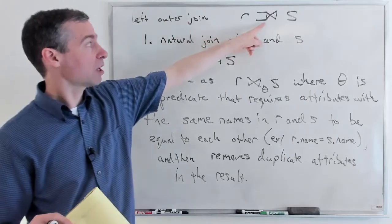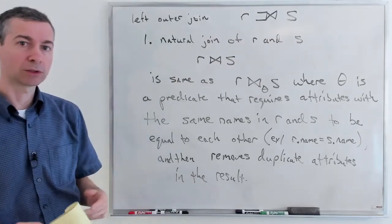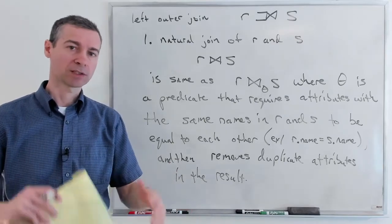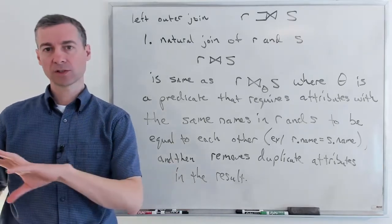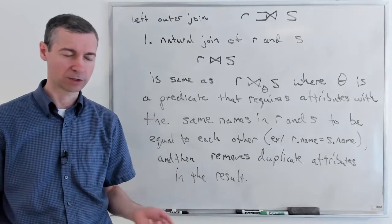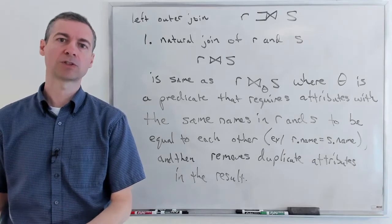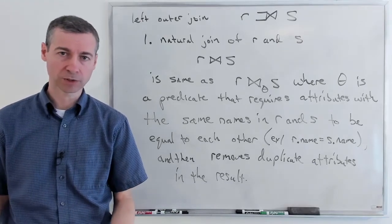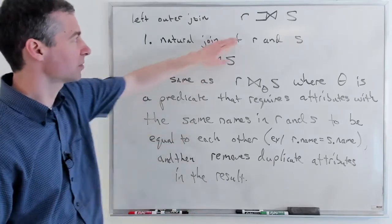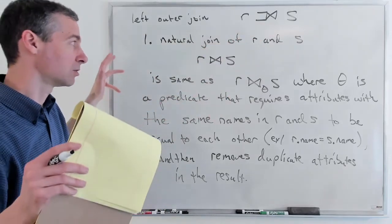The first step of this left outer join in relational algebra is a natural left outer join — we're only going to look at the natural version for illustration purposes. When we get to SQL, we will look at the more general-purpose left outer join and right outer join where we get to specify our own predicate. But just for illustration, the first step is to do a natural join.